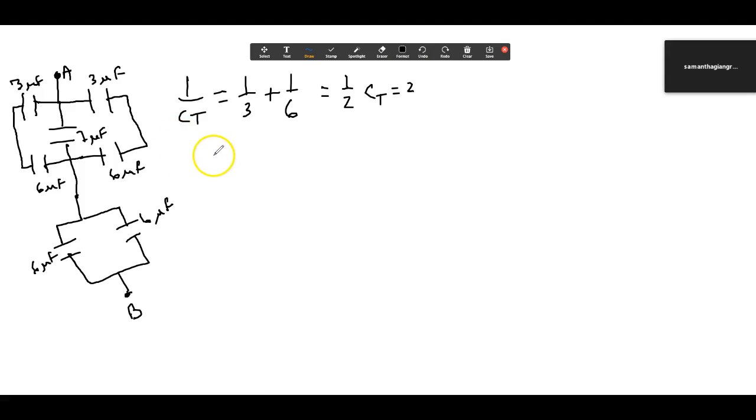You just add them up. So CT would be equal to two plus two plus two. Come on, you can do it. Six microfarads. Okay. So the whole top is six microfarads.